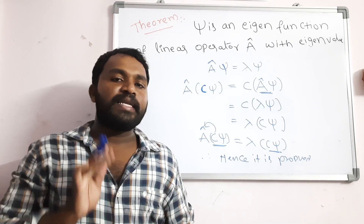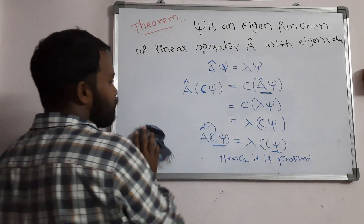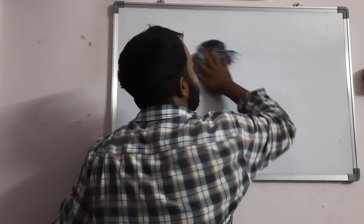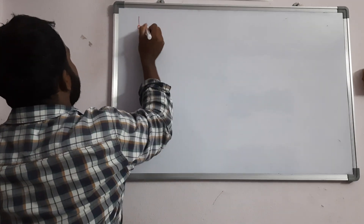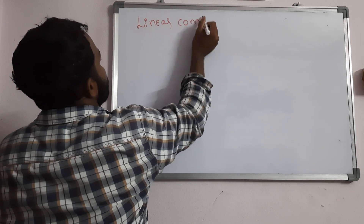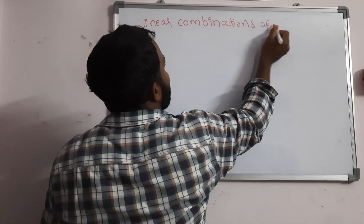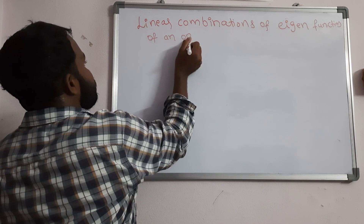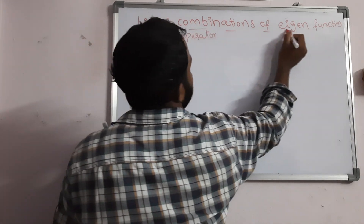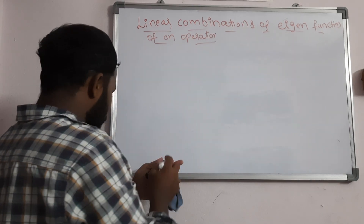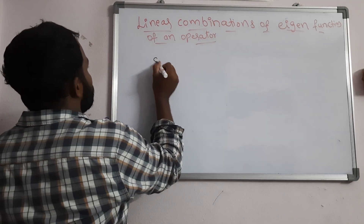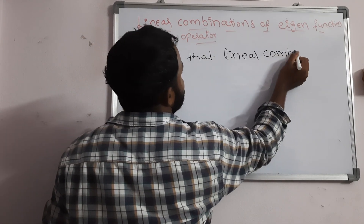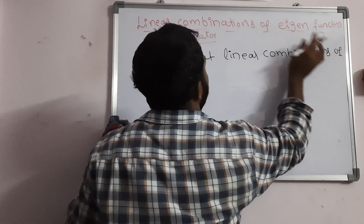This completes the theorem. Next we will discuss the linear combinations of eigenfunctions of an operator A-cap. Knowing this theorem, we can derive this concept very easily. The heading is: linear combinations of eigenfunctions of an operator.